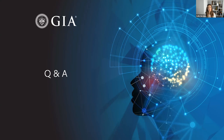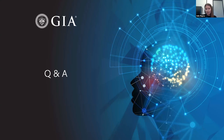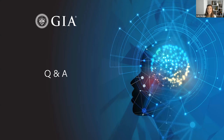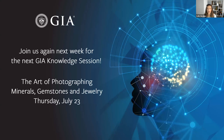Final question — Sally's favorite color diamond: having first worked with gem diamonds by studying phosphorescence on the Hope Diamond and type 2b stones, her first love is some type 2b blue diamond. Kelly thanks Sally for the fantastic presentation, directs viewers with remaining questions to GIA's social media channels on Instagram, Facebook, LinkedIn, and Twitter, and previews the next session with Robert Weldon on the art of photographing minerals, gemstones, and jewelry.